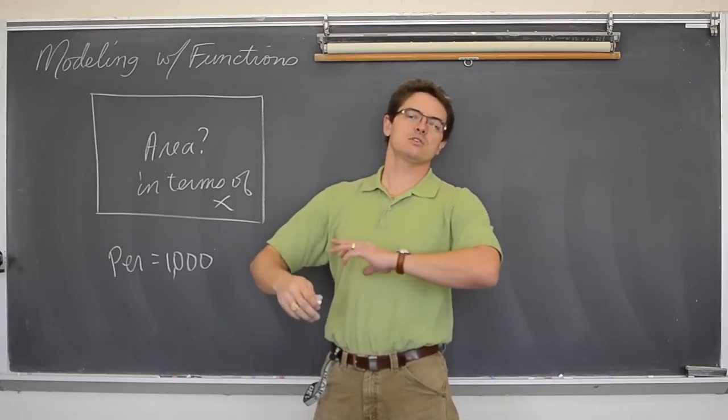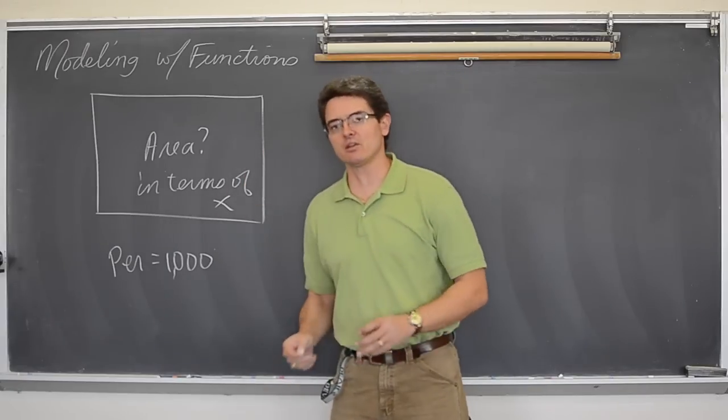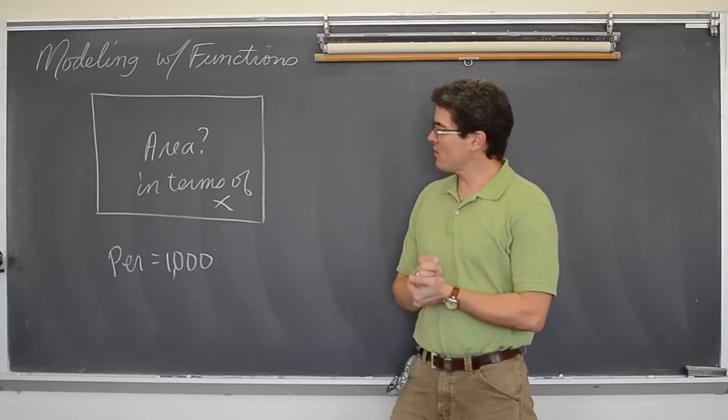for this rectangle, the perimeter must be 1000 units. Feet, miles, inches, yards, whatever it is you are putting around this rectangular area.